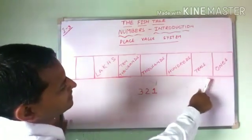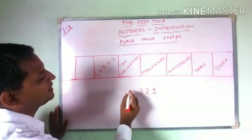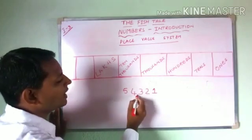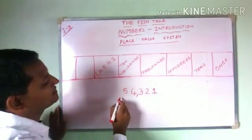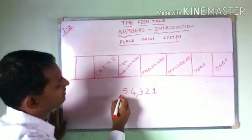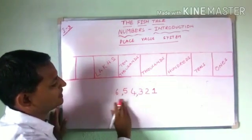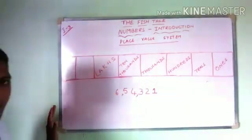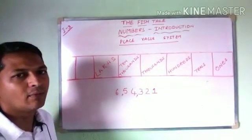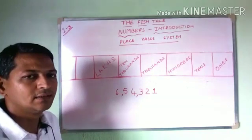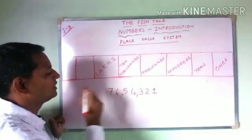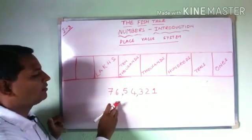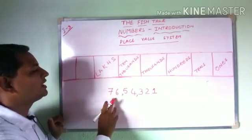The first place value is 1s, then 10s, then 100s, then 1000s, then 10,000s. You all have the capability of reading the number 54,321. If we keep 6 here, it becomes 6,54,321. But if we keep one more number towards the right of 6, what is that place value called? That is what we are going to learn here. If we place 7 there, meaning one more digit to the right of 6, the value increases 10 times.